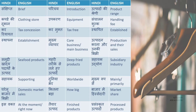Utpadon ki shreni means product range. Kapde ki dukan means clothing store. Upkaran means equipment. Sanchalan shulk — basically in some dialogues they would say 'we are ready to export this product but there will be some handling fee.' So you have to say sanchalan shulk. Is utpad par sanchalan shulk lagu hoga.